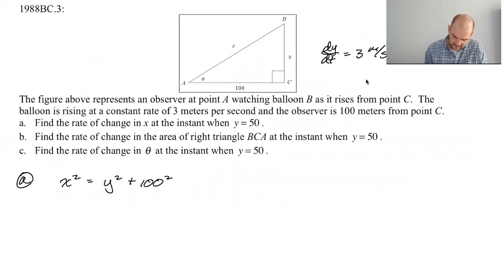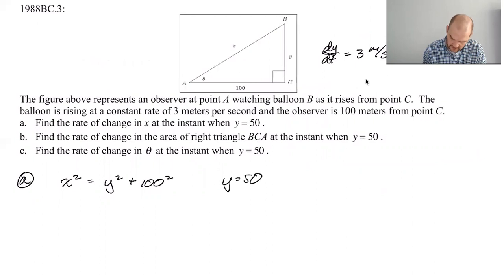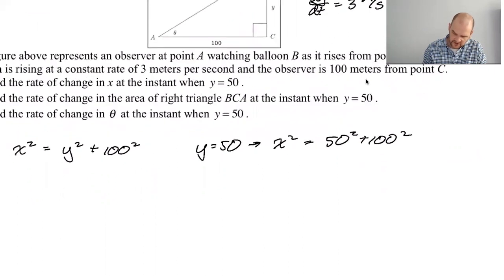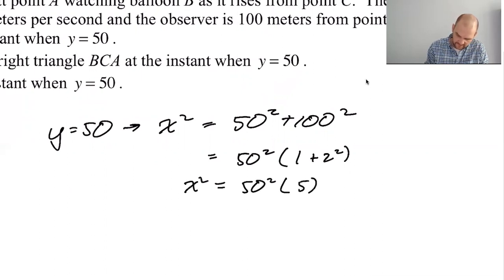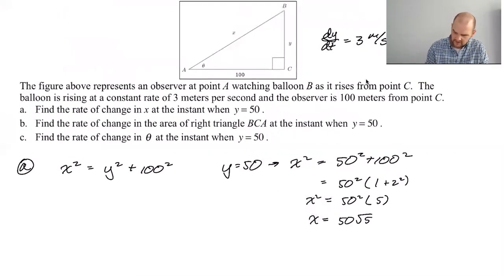So hypotenuse equals leg squared plus leg squared. Now we want to know when y equals 50. So if y equals 50, that means that x squared equals 50 squared plus 100 squared, which like you can just do that out. But another option is both of these have a 50 squared in them, and one that's 50 times two squared. So 50 squared, two squared. So you would get 50 squared times five is x squared. So then x is going to be 50 root five, technically plus or minus, but like the distance isn't going to be minus. So we know it's going to be 50 root five.